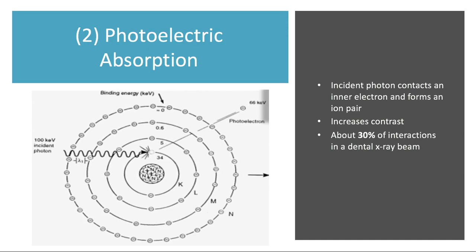Photoelectric absorption is where the incident photon contacts and ejects an inner shell electron, forming an ion pair. As soon as ions are involved, we're talking about ionizing radiation. This type of interaction contributes greatly to increasing the image contrast.